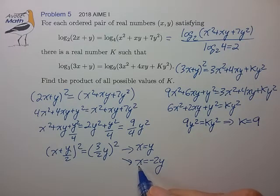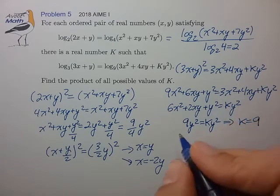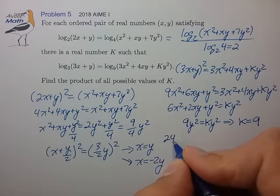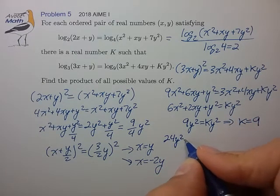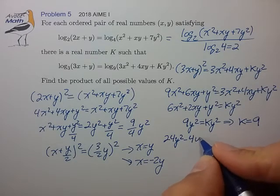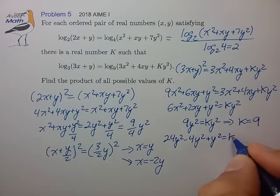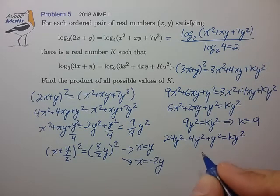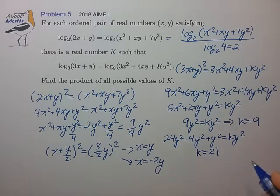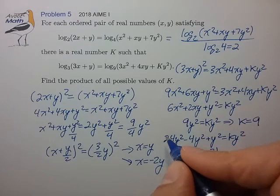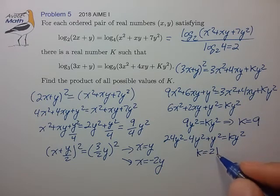And using x equals minus 2y, this reduces to 24y squared minus 4y squared. So that is that k would have to equal 21, and k is equal to 9, k is equal to 21.